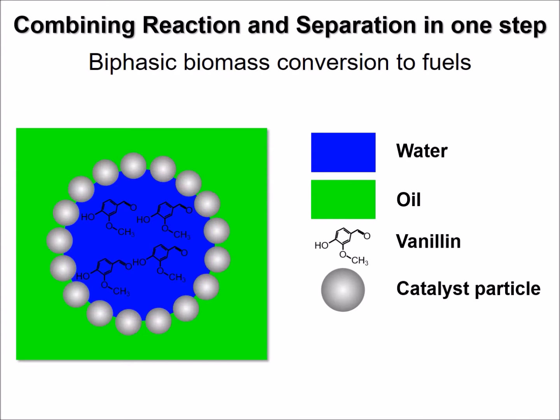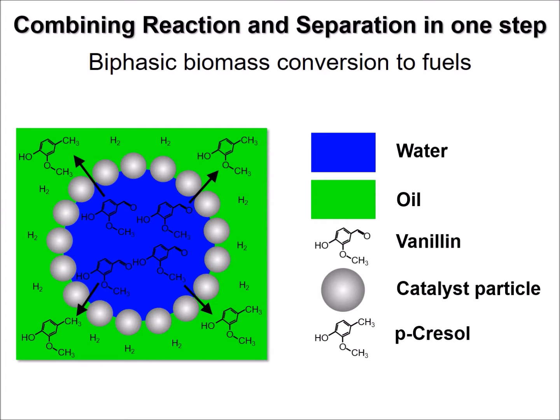The fuel stability can be improved upon chemical conversion of vanillin. This can be realized efficiently by locating catalyst particles at the oil-water interface. The conversion of vanillin produces p-cresol, a valuable fuel component.